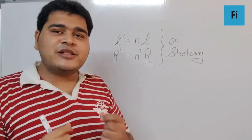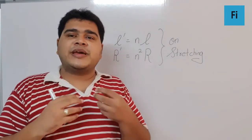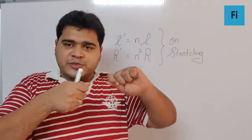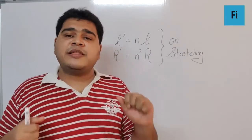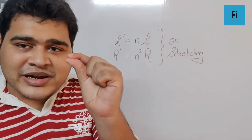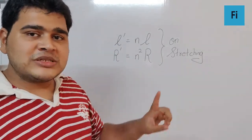The only way you can extend its length is by stretching it, by pulling it. And when you increase the length, definitely the area of cross-section will reduce down, and that causes this effect.